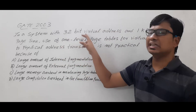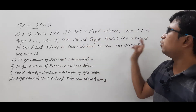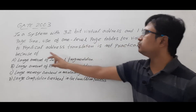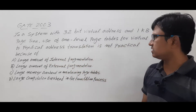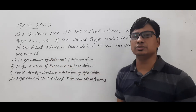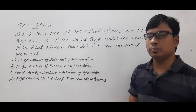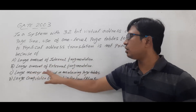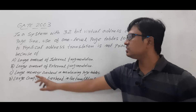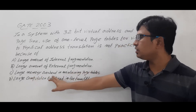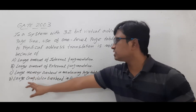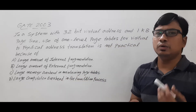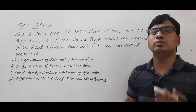The question is: in a system with 32-bit virtual address and 1 KB page size, use of one-level page tables for virtual to physical address translation is not practical because of — they have given four options. Option A: large amount of internal fragmentation. Option B: large amount of external fragmentation. Option C: large memory overhead in maintaining page tables. Option D: large computation overhead in the translation process.